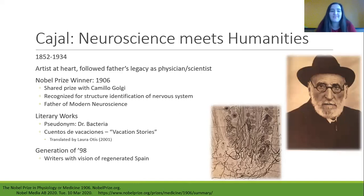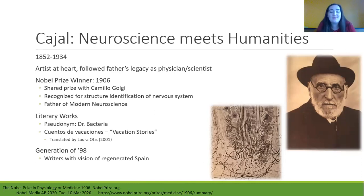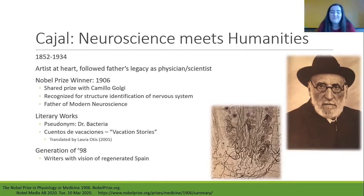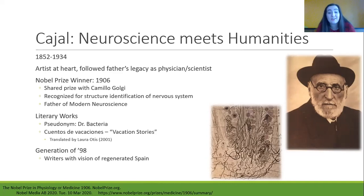So first, who is Santiago Ramón y Cajal and why should we care about what he's writing? Cajal was an artist at heart — he really wanted to be an artist when he grew up, but influenced by his family, his father encouraged him to be a physician scientist. So he and his brother both became physician scientists, and Cajal won the Nobel Prize in 1906 with Camille Golgi, both recognized for their work on identifying the structure of the nervous system. He is known as the father of modern neuroscience.